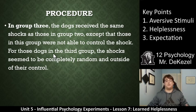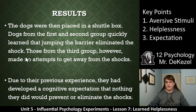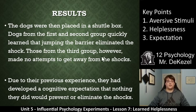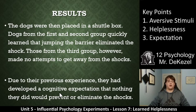Seligman then placed all dogs into the shuttle box to see what would happen. The dogs from groups 1 and 2 quickly learned that jumping the barrier eliminated the shock — they were still capable of helping themselves because they had not learned helplessness. The dogs from group 3, however, made no attempts to get away from the shocks. They had already learned that nothing they did would stop the shocks, so there was no point in trying. Due to their previous experience, they had developed a cognitive expectation that nothing they did would prevent or eliminate the shocks.